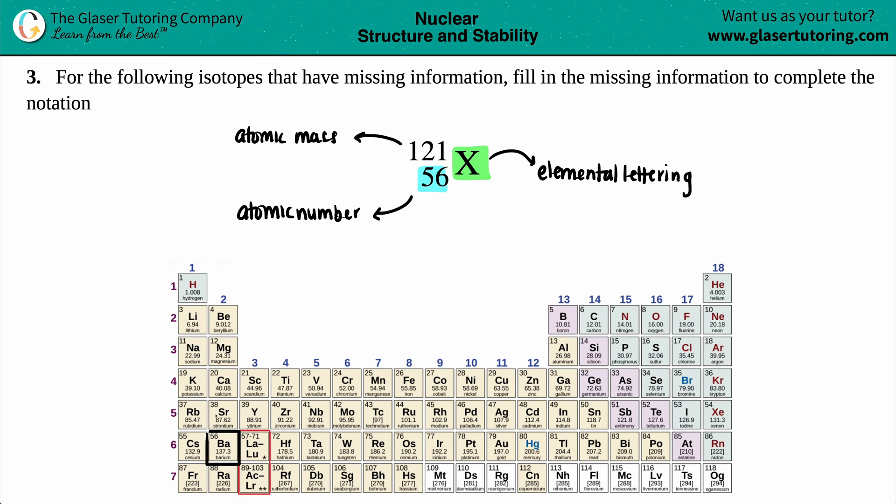It's barium, right? Barium, which is BA. Here's the 56 over here. So we have to give the lettering. We don't just say barium, but we have to just give the elemental symbol. So that's just BA.